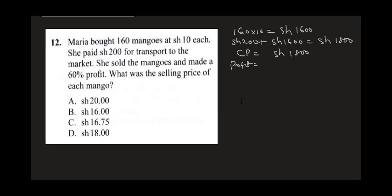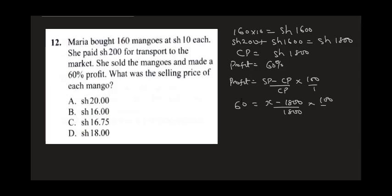Her profit percentage is 60%. The formula is: Profit% = (Selling Price − Cost Price) / Cost Price × 100. So: 60% = (x − 1800) / 1800 × 100. Dividing both sides: 60/100 = (x − 1800) / 1800, which gives 0.6 = (x − 1800) / 1800.